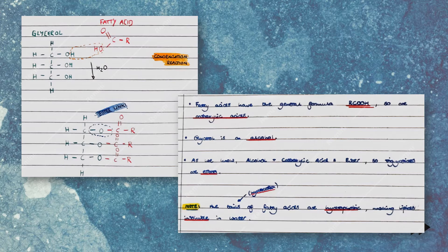To summarize: fatty acids have the general formula RCOOH, having a carboxylic acid group, so are carboxylic acids. Glycerol is an alcohol with an alcohol functional group. As we know from chemistry, alcohols and carboxylic acids react to form esters, so triglycerides are esters. Note that the hydrocarbon tails of fatty acids are hydrophobic, making lipids insoluble in water.